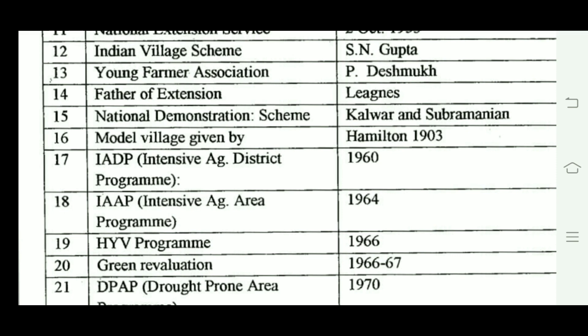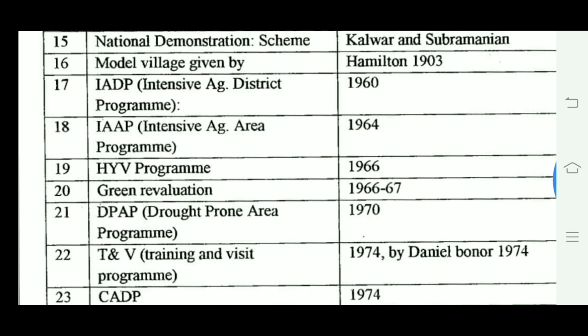The High Yielding Variety Program was introduced in 1966. The Green Revolution took place in 1966–67. The Drought-Prone Area Program was introduced in 1970.